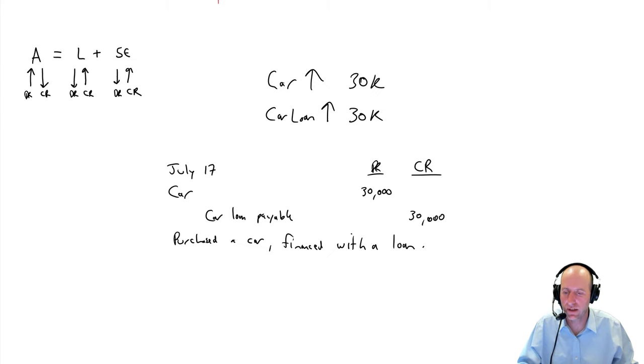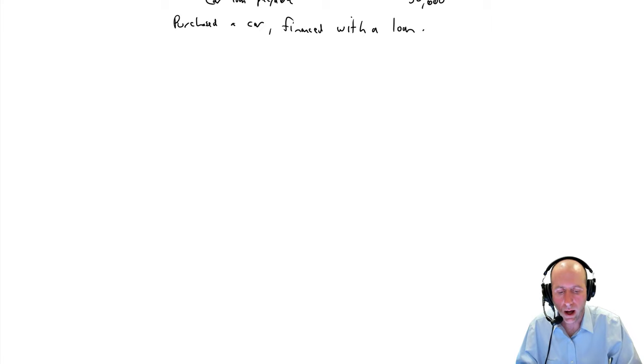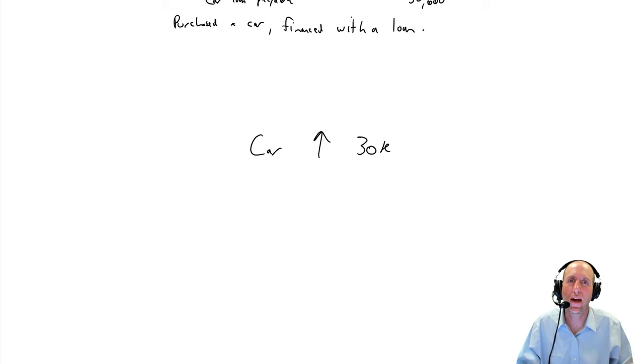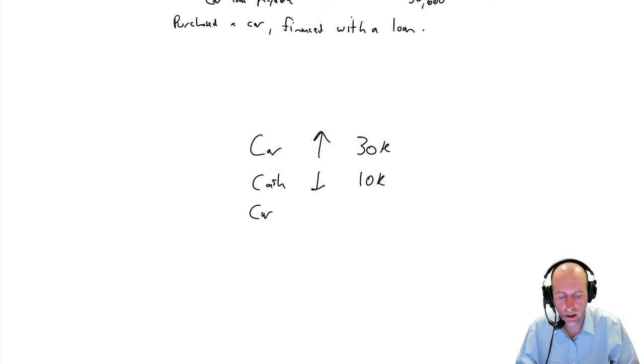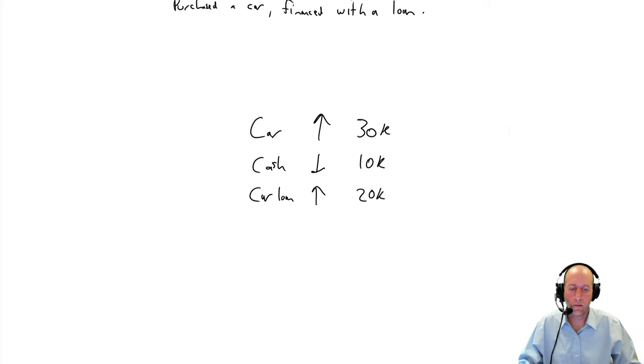We need to date this thing. So, again, July 17th. And we need to describe it. Purchased a car financed with a loan. So, we've done our second journal entry. Time to move on to the third and final journal entry of this intro. Let's do the third journal entry, the third scenario. Scenario three, I buy a car. My car goes up $30,000. But I put $10,000 down and finance the rest with a car loan. So, my cash goes down $10,000. And my car loan goes up $20,000.